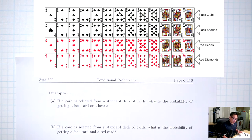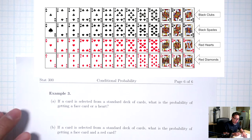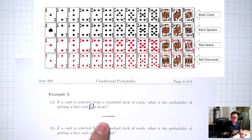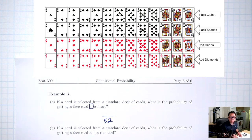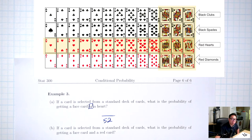Now let's talk about cards. Part A: if a card is selected from a standard deck of cards, what's the probability of getting a face card or a heart? Keyword: OR. Bottom is 52 total cards. OR means all face cards combined with all hearts. Face cards are 12 (3 × 4 suits). Combined with hearts, but don't double-count the J, Q, K of hearts. So it's 12 plus 10 hearts (A through 10) = 22 total.